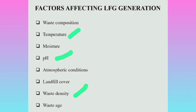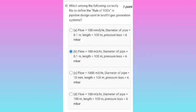Third one: which of the following factors affects LFG generation? For the third question, it is option D — all of the above: temperature, pH, and waste density.